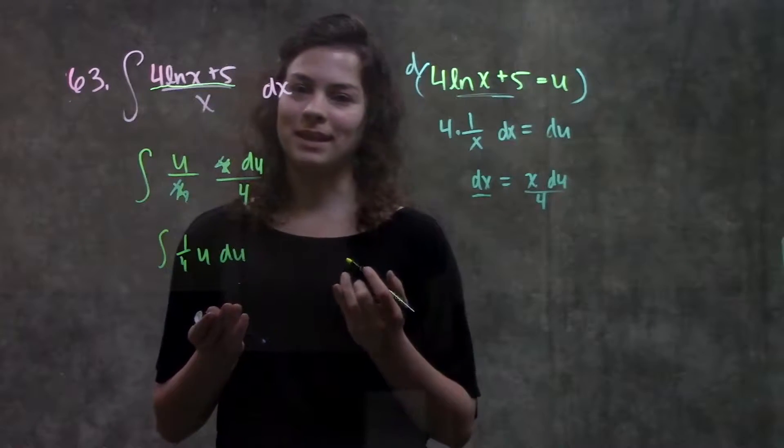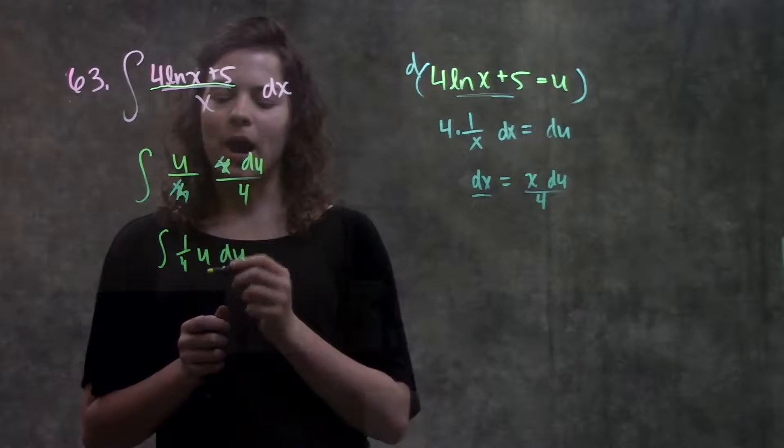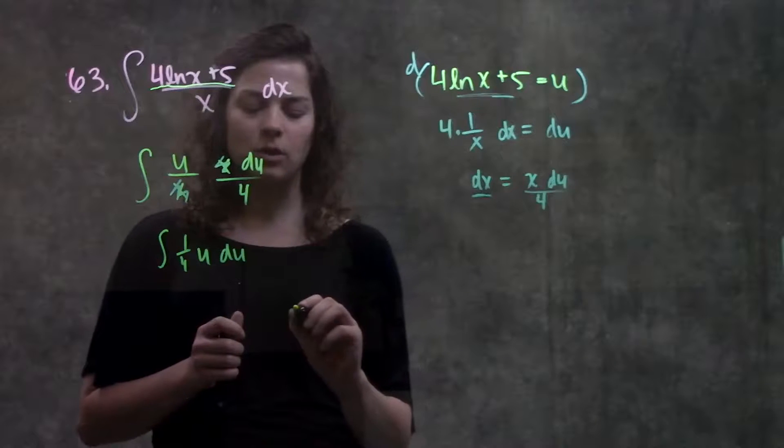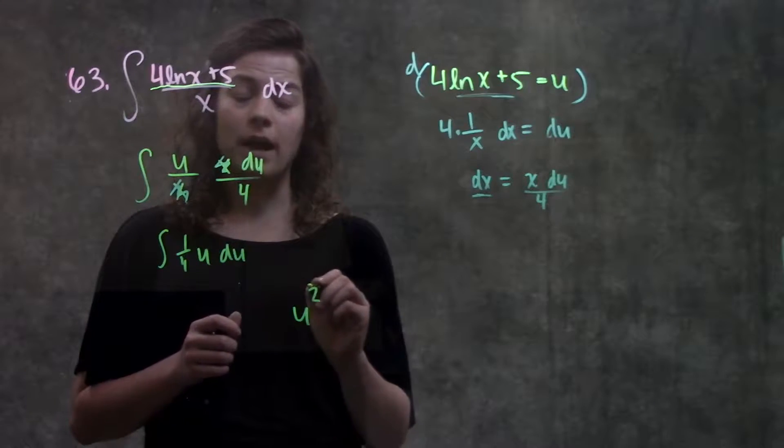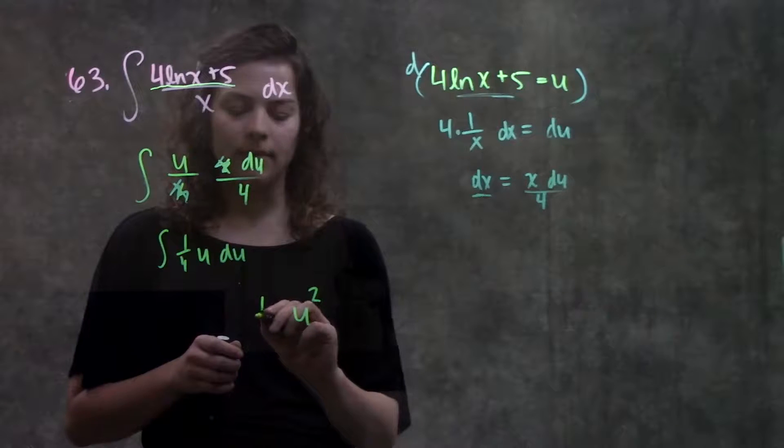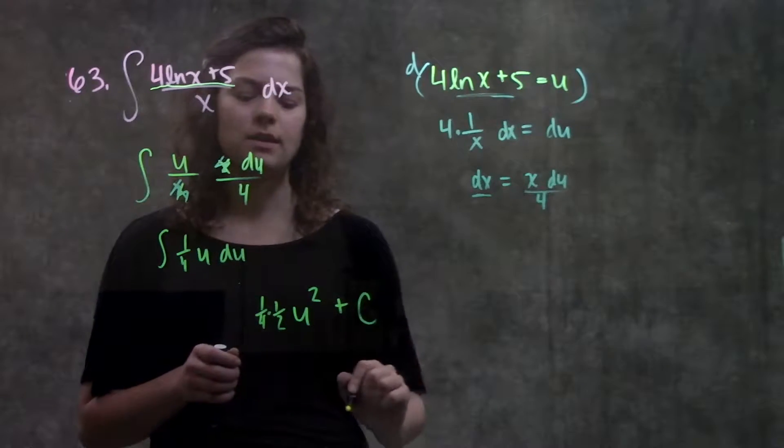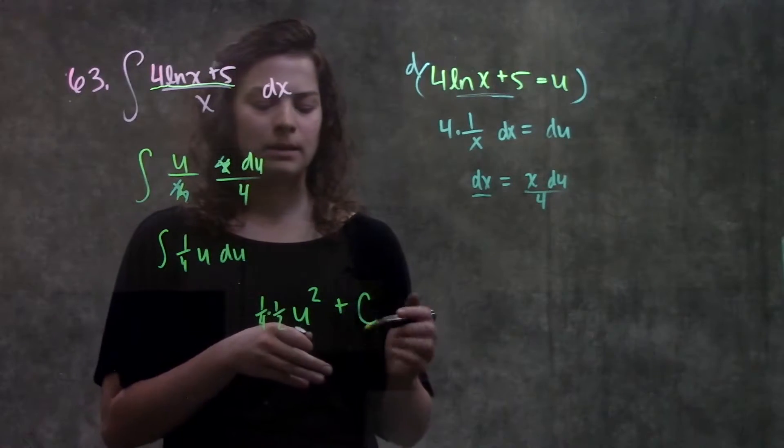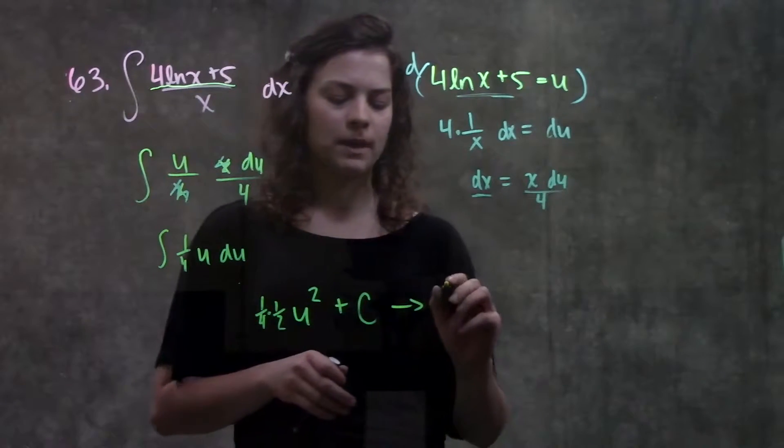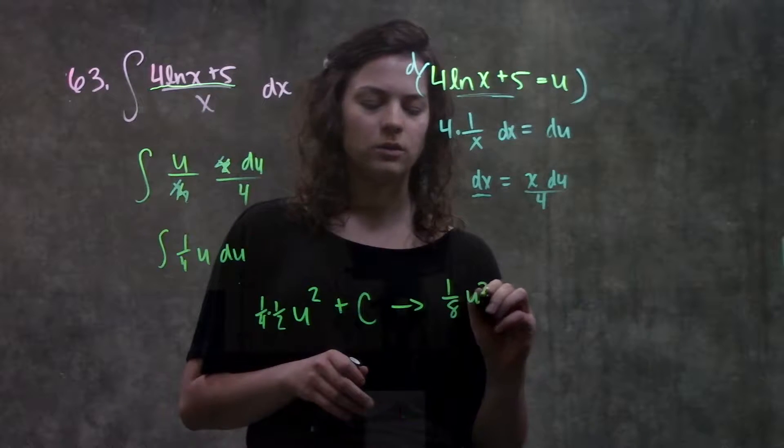And I definitely know how to take the integral of this. Using my power rule, I just add 1 to the exponent, so it becomes u squared, and now I'm going to divide by this new number, so it becomes 1 fourth times 1 half u squared plus c, since it's indefinite, and simplifying this a little bit, this becomes 1 over 8 u squared plus c.